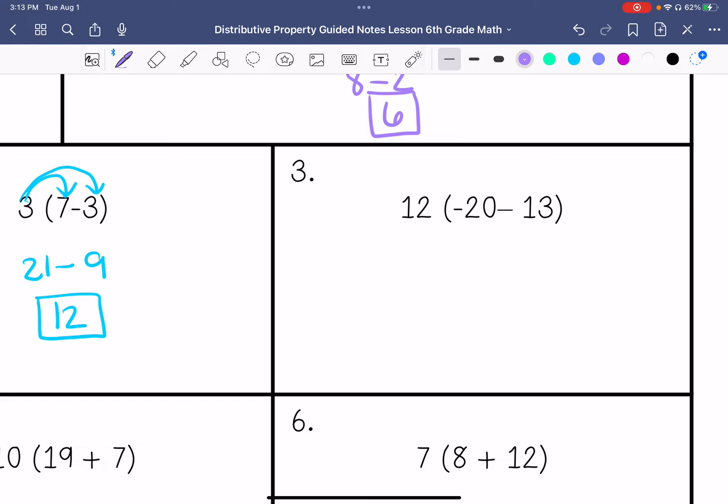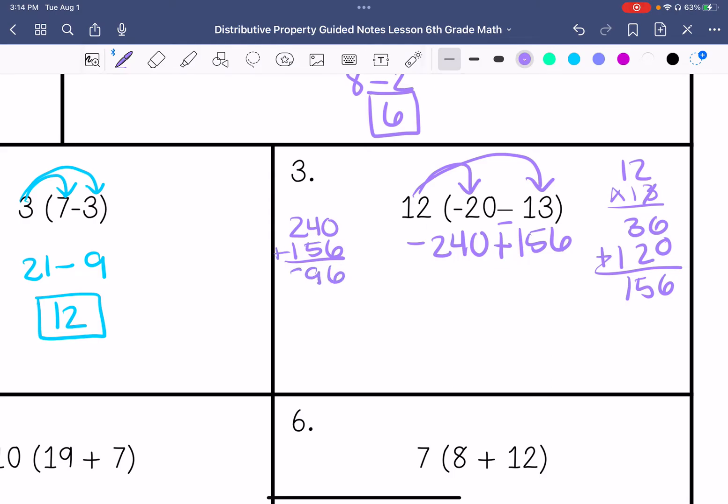Number 3. 12 times negative 20 is negative 240, and then 12 times 13, that's 156. Then we keep change change. So 240 plus 156. If we remember our integer rules, so this would be negative 84.